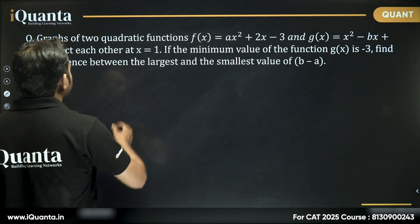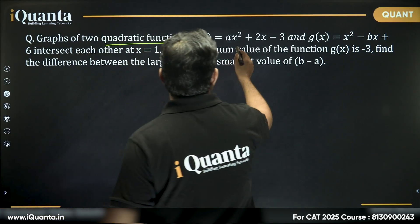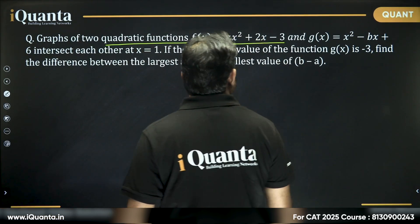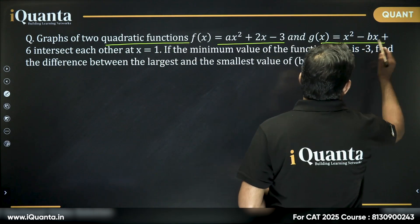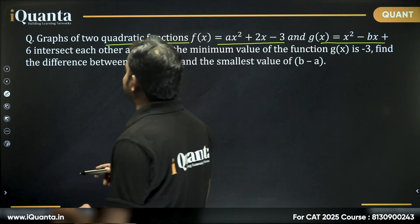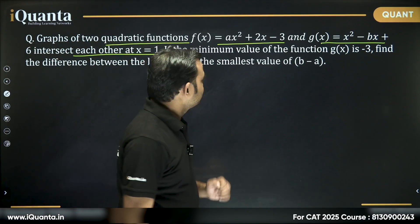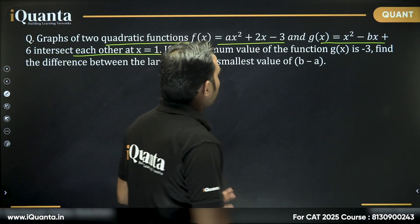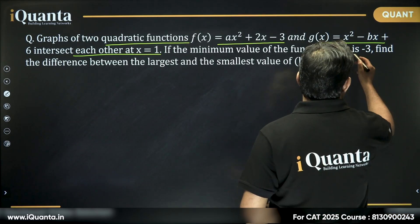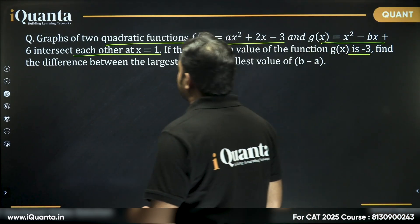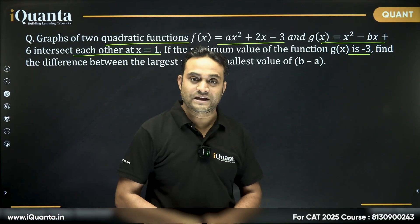It says: graphs of two quadratic functions, f(x) = ax² + 2x - 3 and g(x) = x² - bx + 6, intersect each other at x = 1. If the minimum value of the function g(x) is -3, find the difference between the largest and the smallest value of b - a.